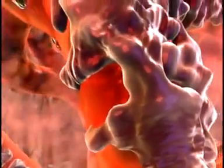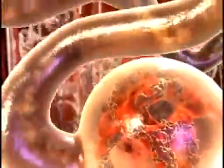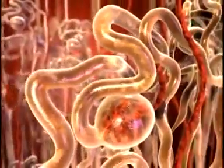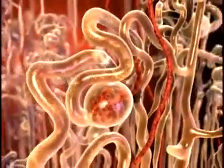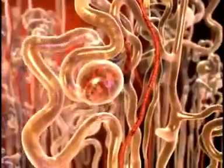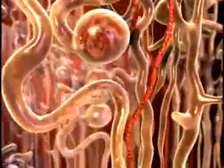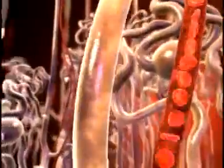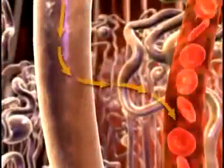The filtrate then diffuses across Bowman's space and into the tubule system of the nephron. In the tubules, some substances are added to the filtrate as part of urine formation, and some substances are reabsorbed out of the filtrate and back into the blood.